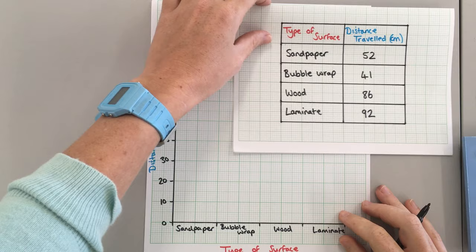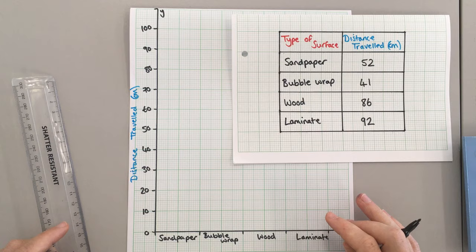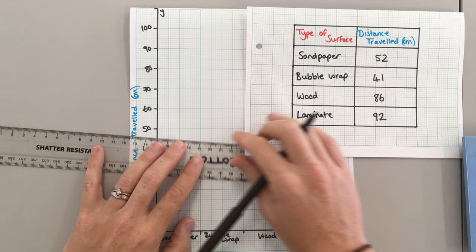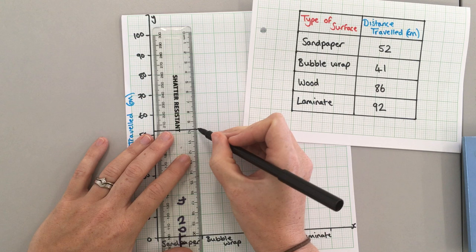Then I'm going to plot my bars. You can have your bars touching—that's absolutely fine. Please use a ruler. So sandpaper goes up to 52, so 50, 1, 2, because each of those small ones counts as one. So I draw a line across and then I'll join it up to the bottom.